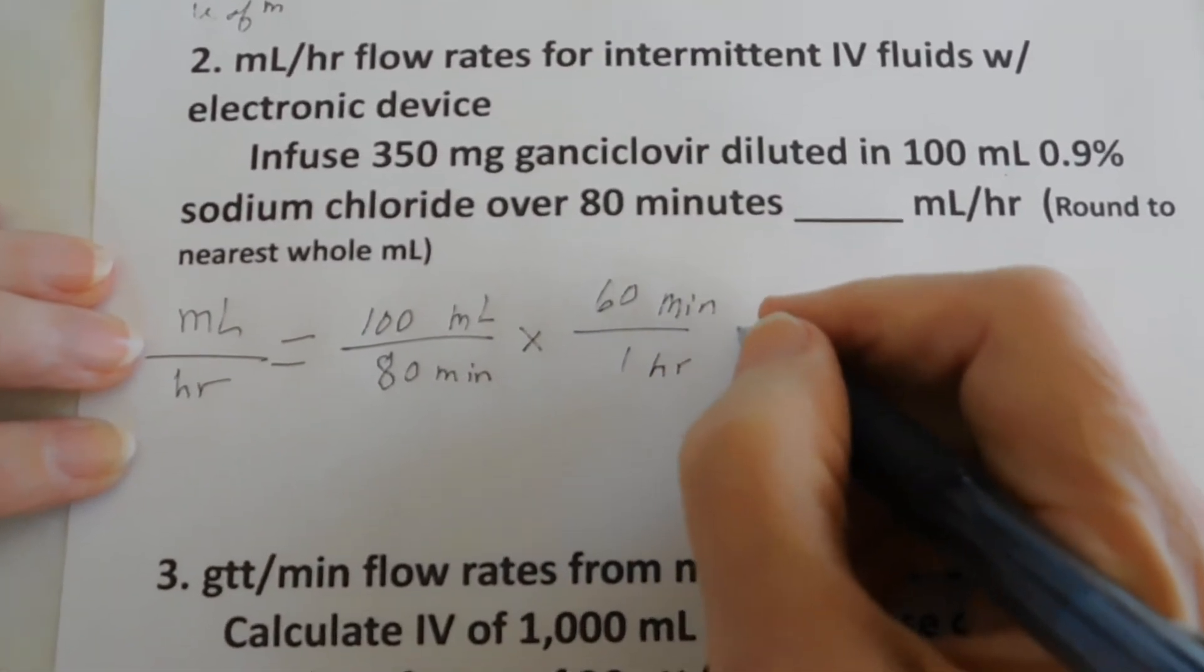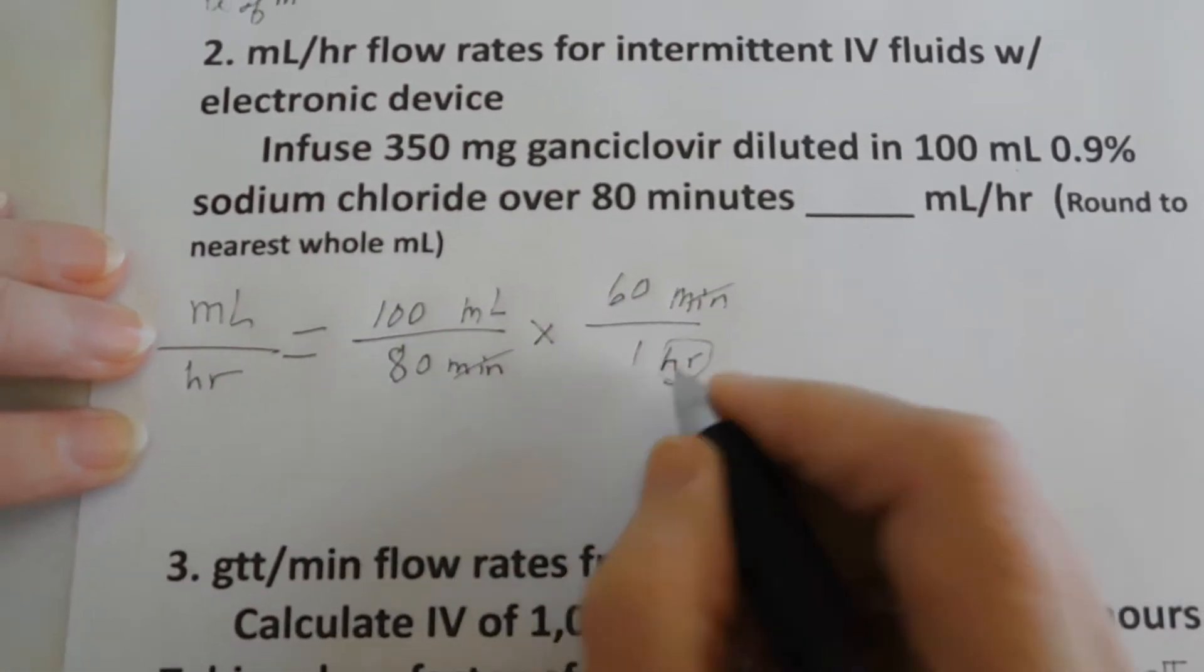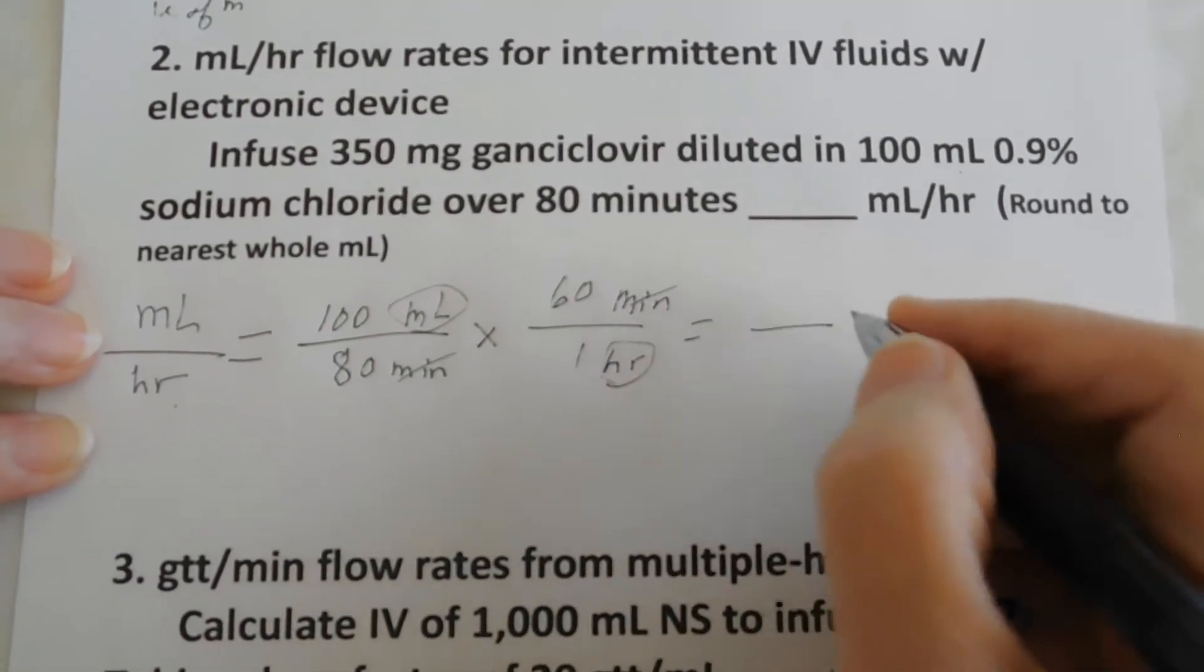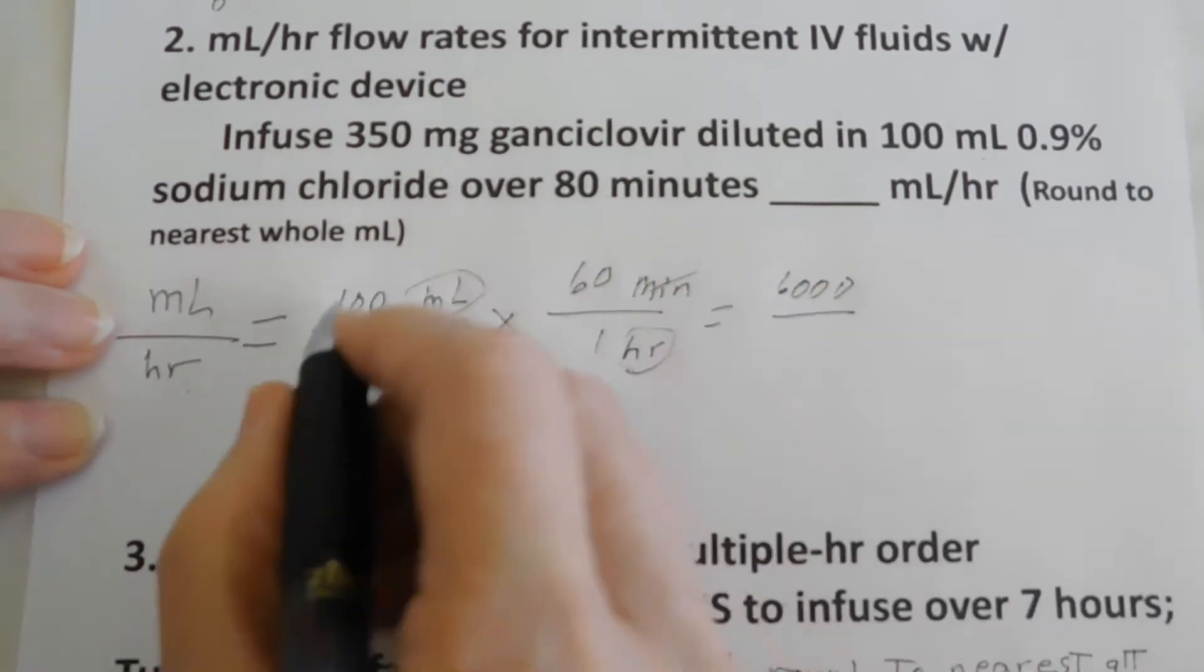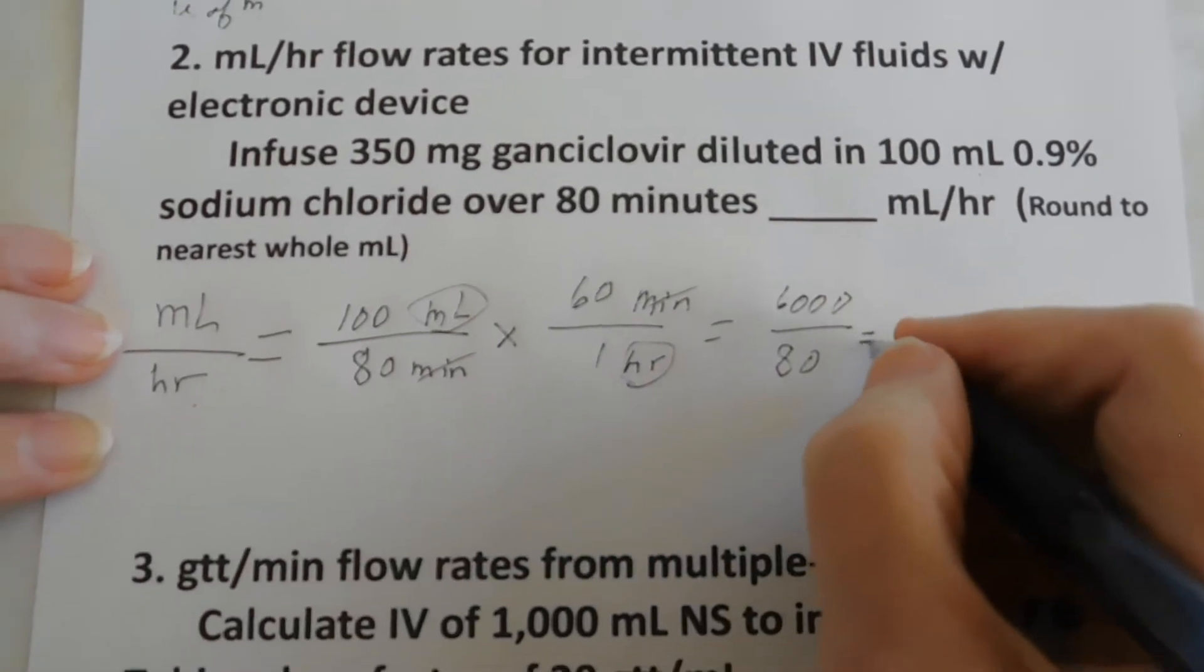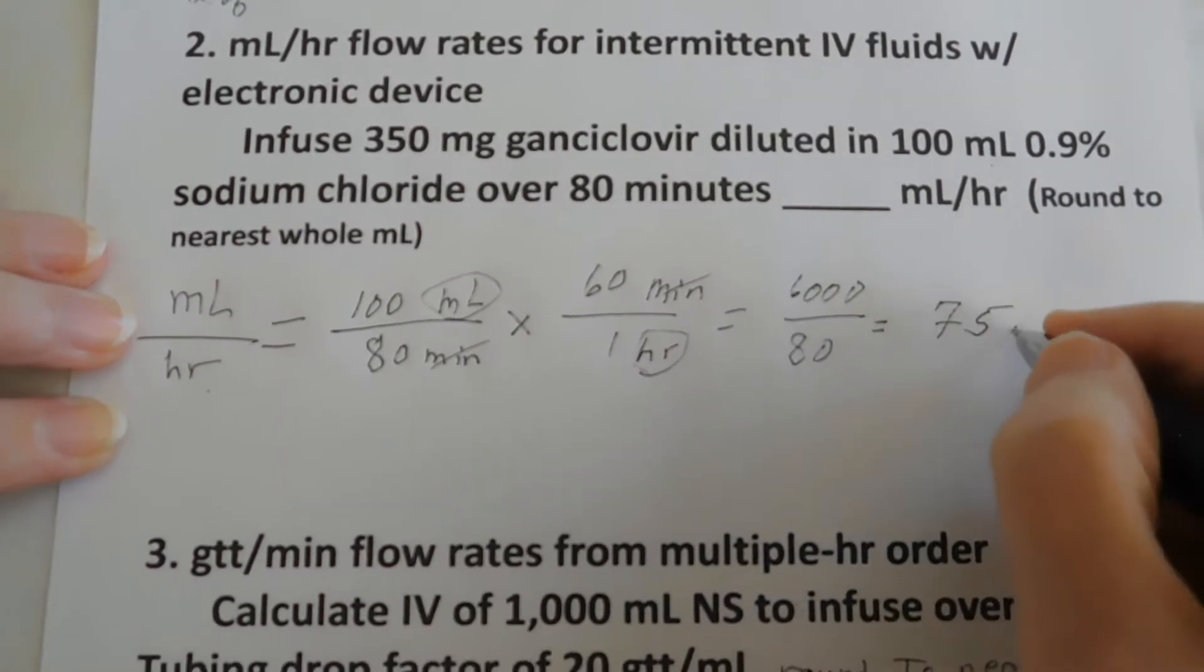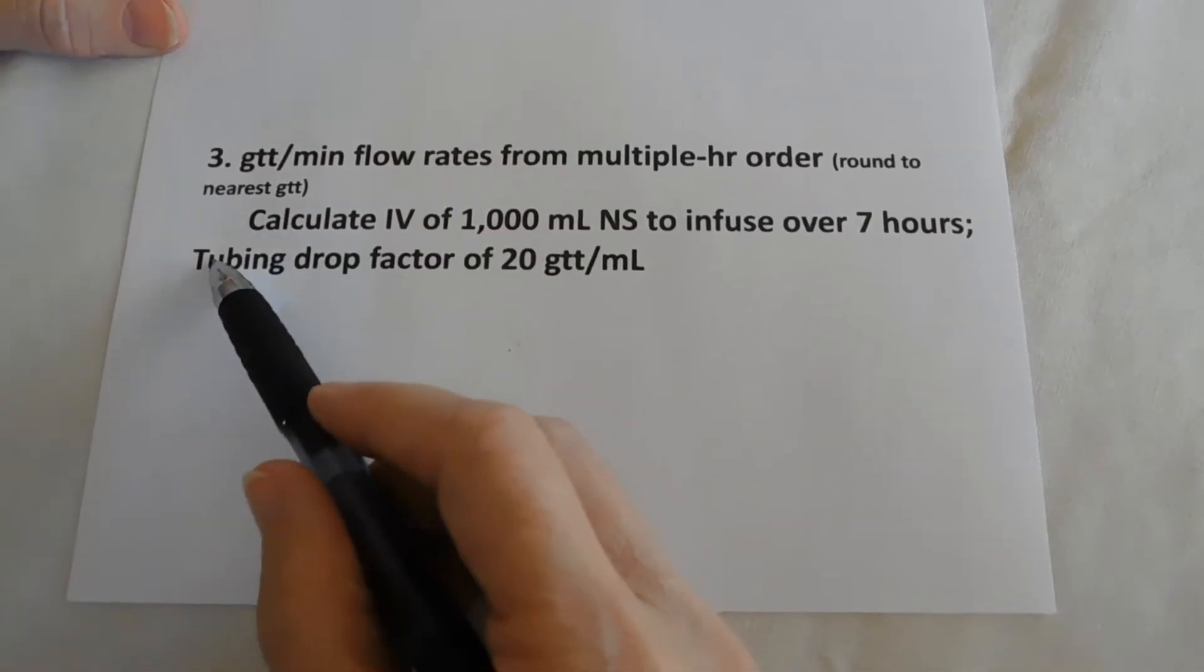Are we ready to solve? We are. Minutes cancel. Hour is left. Milliliters is left. That's our unit of measure. We will then have 6,000. 100 times 60 is 6,000 over 80. 80 times 1 is 80. And that equals 75. What? 75 milliliters per hour.